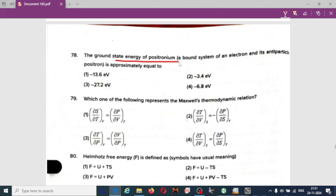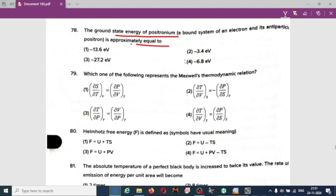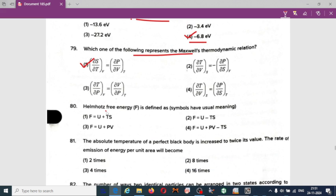The ground state energy of positronium, a bound system of electron and positron, is approximately equal to: among options, minus 6.8 electron volts is correct. Which of the following represents Maxwell's thermodynamic relation? If you thoroughly understood the Maxwell's thermodynamic relations, then easily you can select the option. Option one is correct: derivative of entropy and pressure. Helmholtz free energy is defined as that is given by the difference of internal energy and the product of temperature and entropy. Option two is correct: F equal to U minus TS.